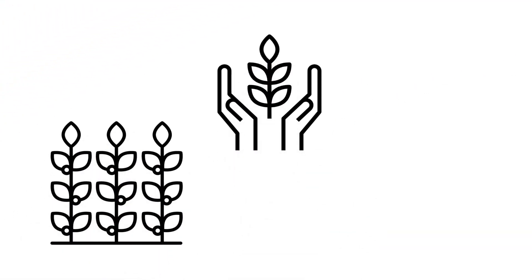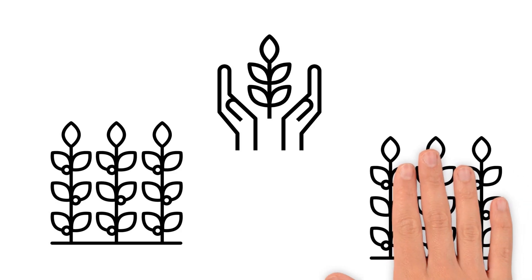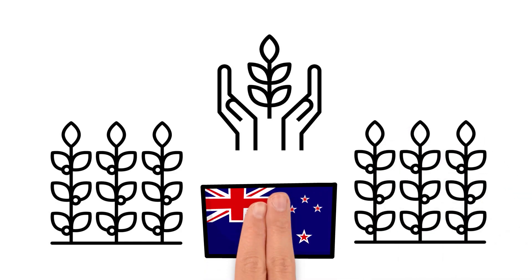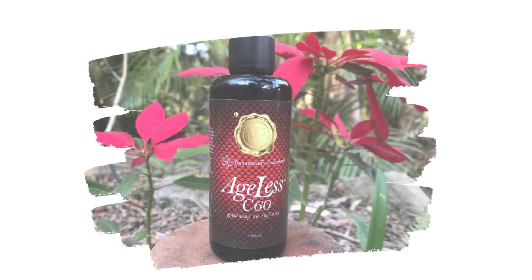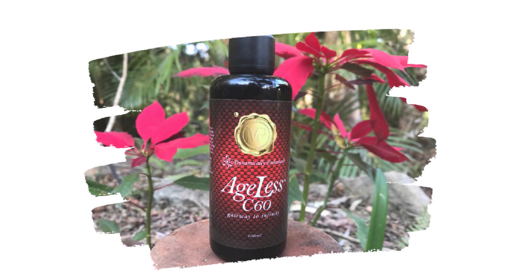The extra virgin olive oil in our ageless C60 comes from a small, family-owned organic orchard in New Zealand. But what really makes our ageless C60 so very special is that not only is it made with the purest possible ingredients, but it is also dynamically enhanced.